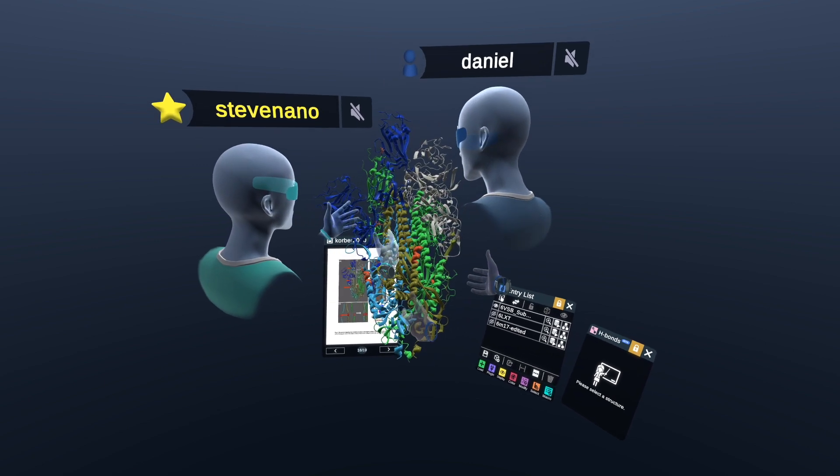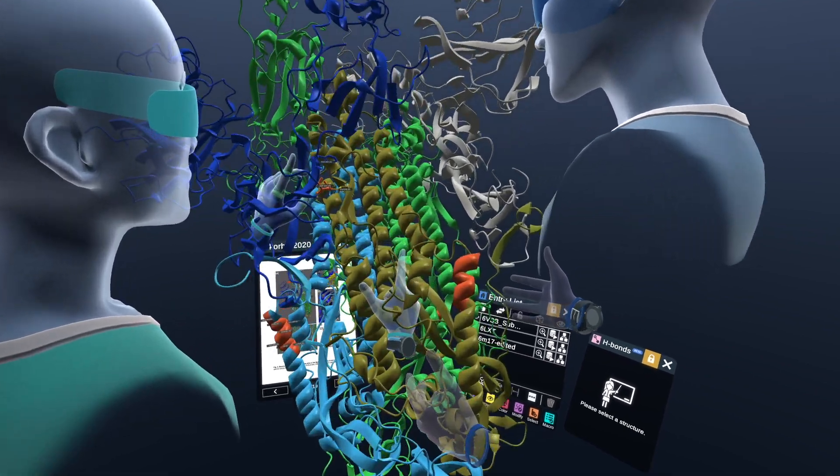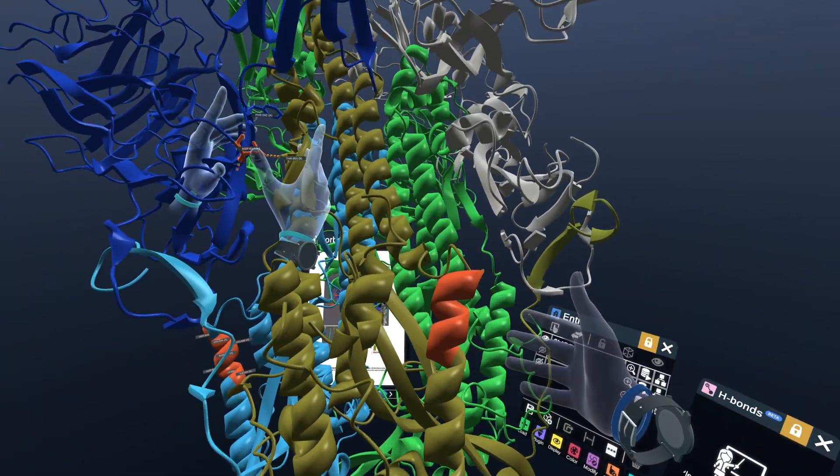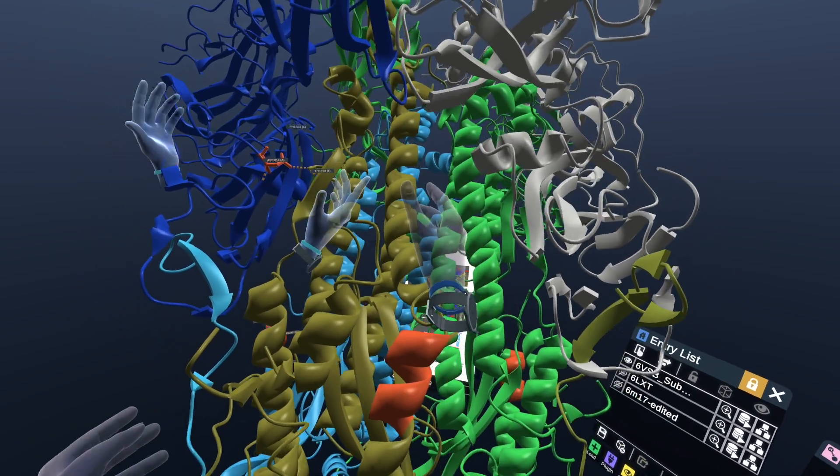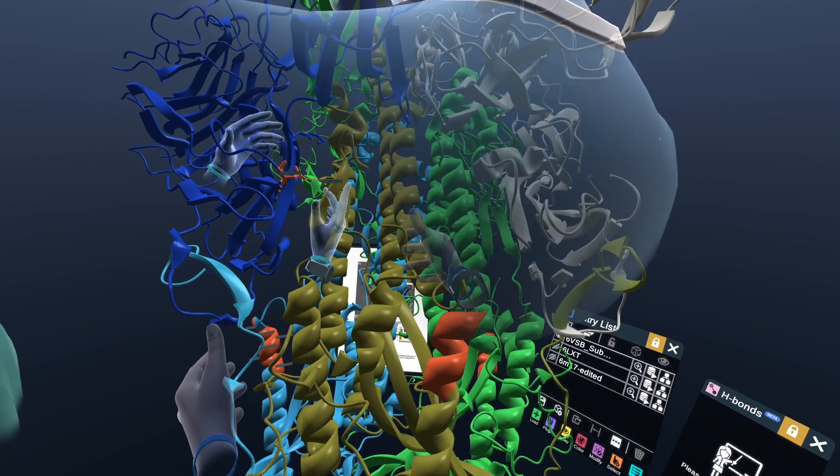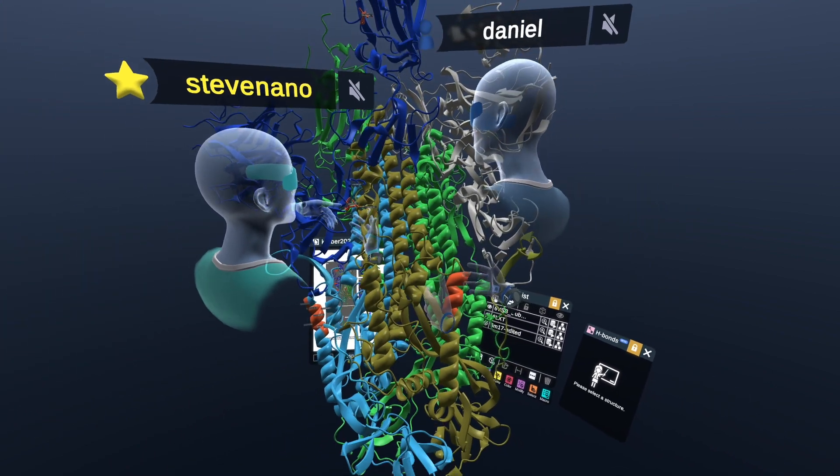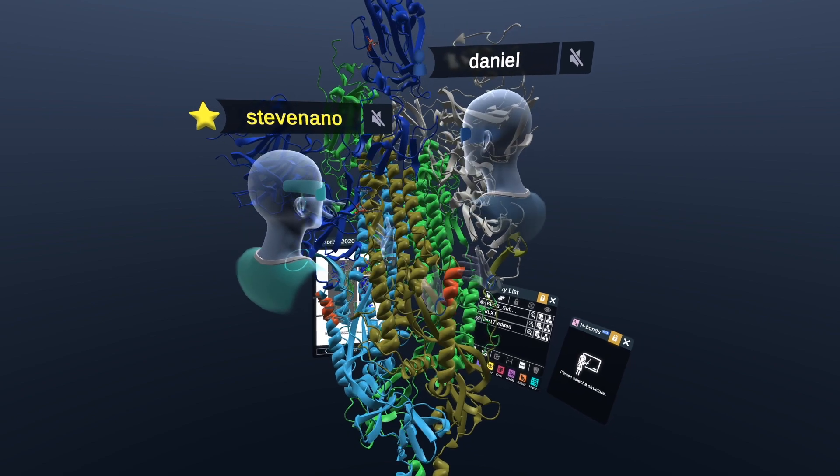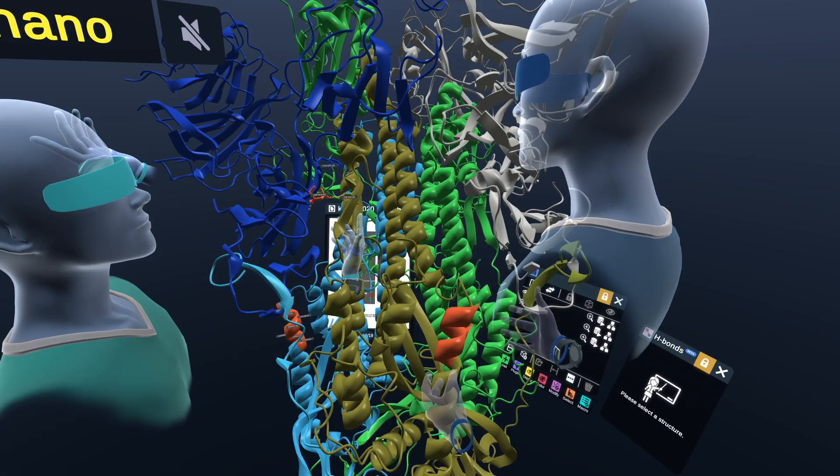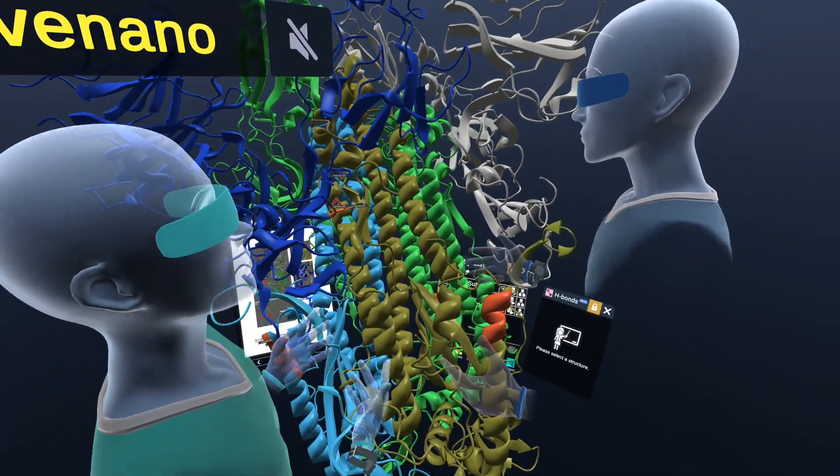So this aspartic acid makes potentially a strong hydrogen bonding with the threonine. So it's important to know that the aspartic acid is located in the S1 unit of the spike protein, whereas this threonine is in S2 unit. And the S1 and S2 being this blue region and this gold region over here.